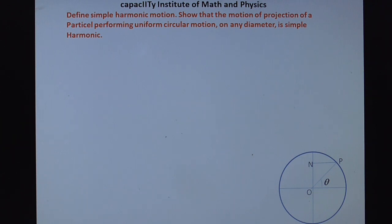The question from oscillations: define simple harmonic motion, show that the motion of projection of a particle performing uniform circular motion on any diameter is simple harmonic.